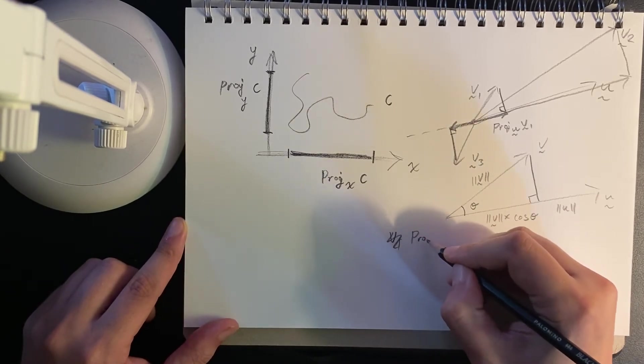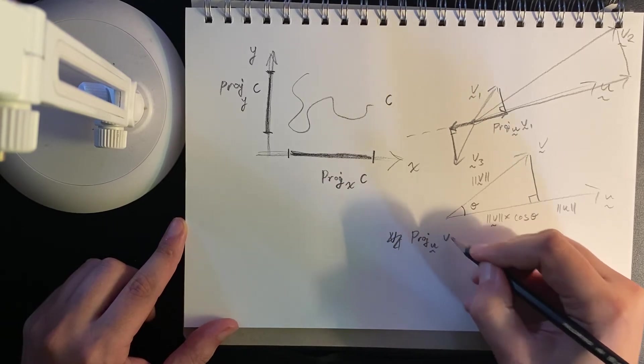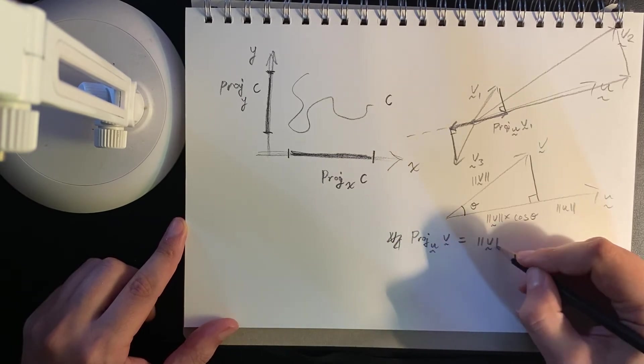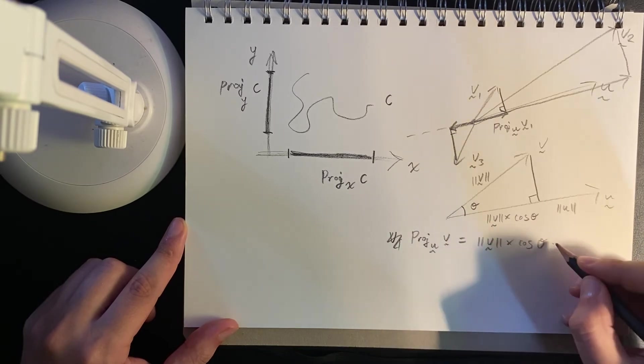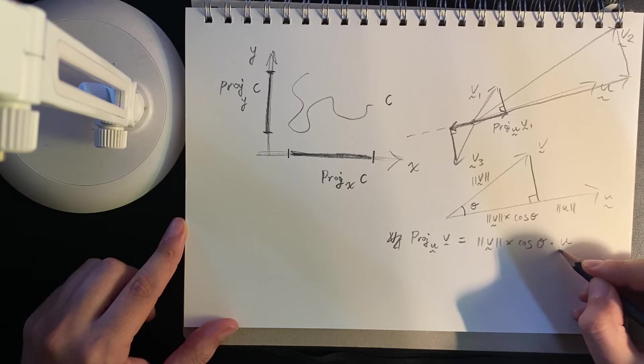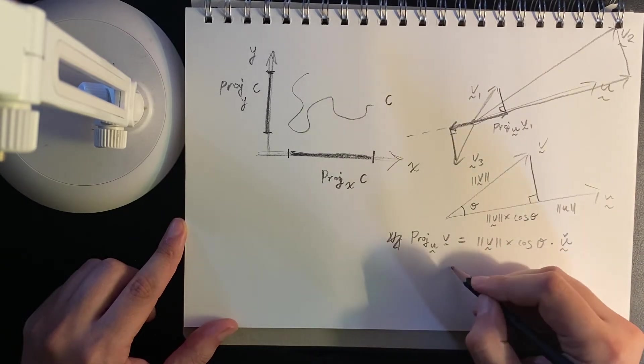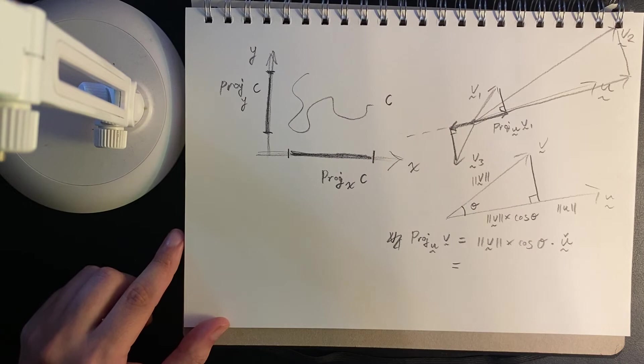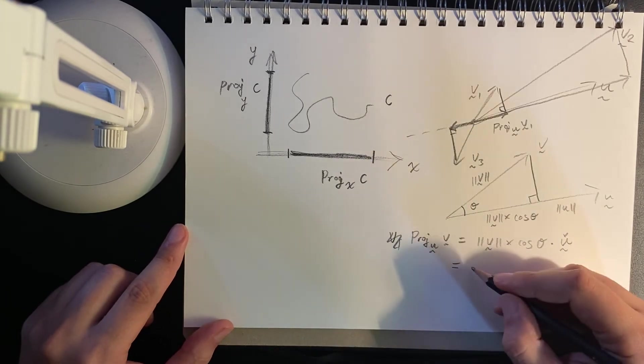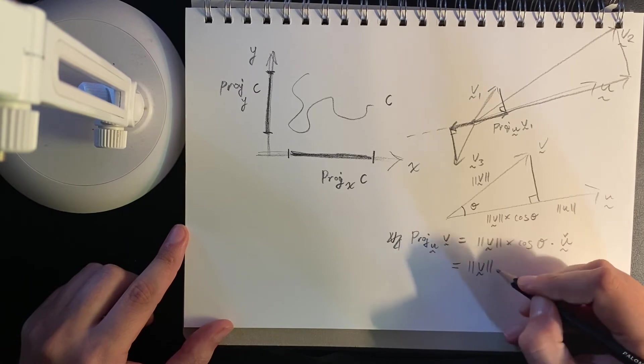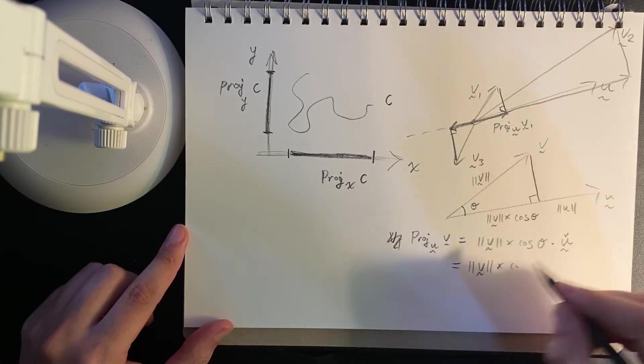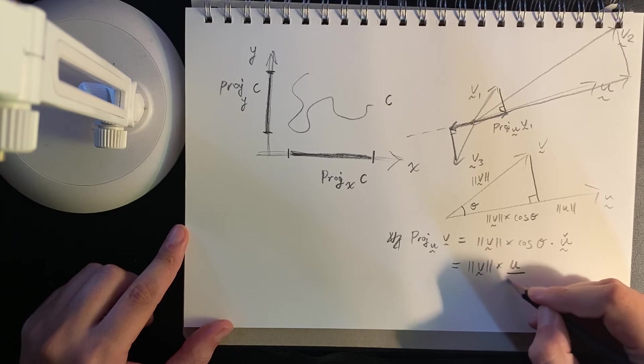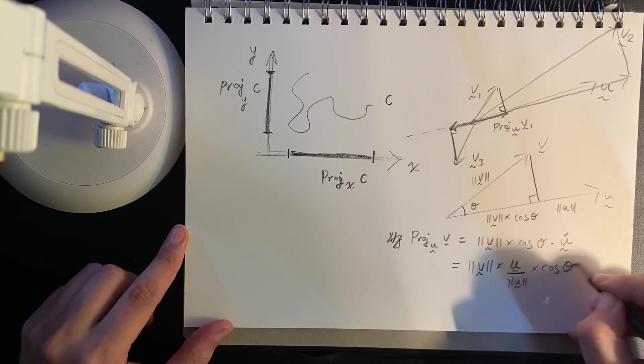So what we want to say is we want to say the projection onto u of v is we want the appropriate length times the unit vector u, because we want it to still have that direction. So when we multiply a unit vector, it just stretches it out to the appropriate length. Now I'm going to rejig this a little bit. So I'm going to say, okay, length v times, I'm going to take u, and I'm going to say u hat is u divided by its length times cosine theta.